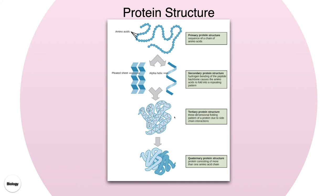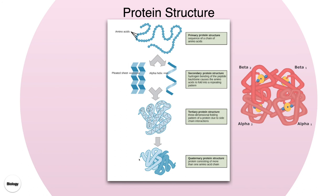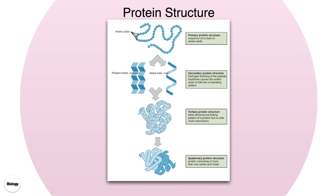Once we have our tertiary structure, we can build more complex proteins by binding several tertiary proteins together. We could have two, three, or four protein chains. An example with four different protein chains is hemoglobin, which is the protein responsible for transporting oxygen throughout the body — it is a blood protein. This quaternary structure is due to hydrogen bonding, disulfide links, and hydrophobic and hydrophilic interactions between the protein structures.